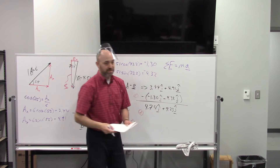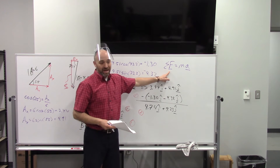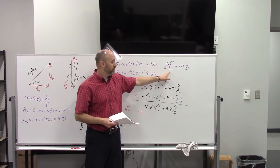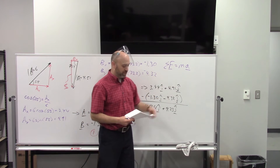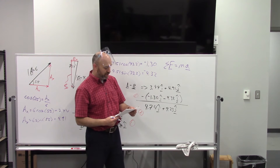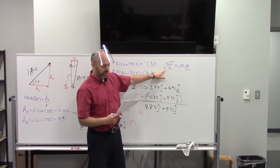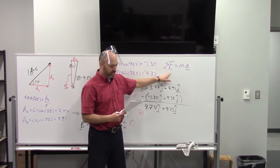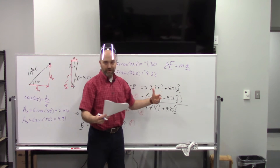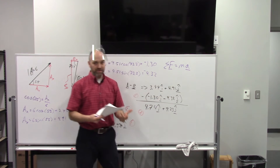The second law is the most used in this class by far — it's how we attack every single problem. The sum of forces equals ma, but don't forget it's a vector equation. Add up all the forces acting on your object from the outside, and that equals mass times acceleration. The summation sign and the vector notation are both important.